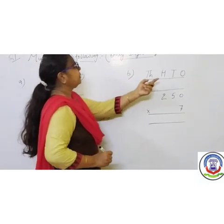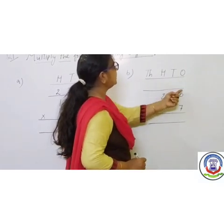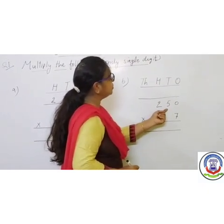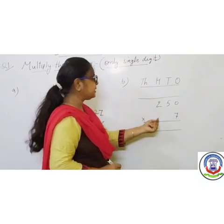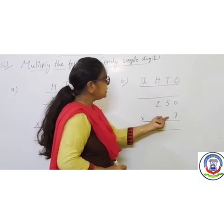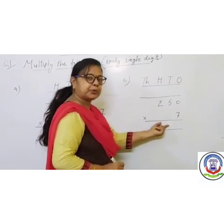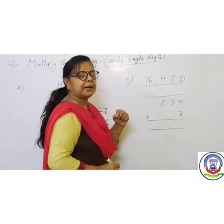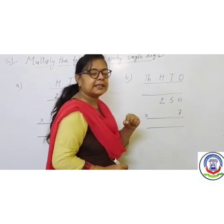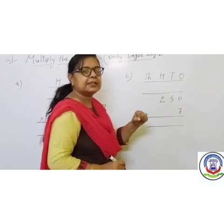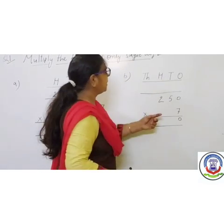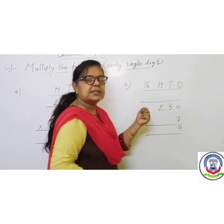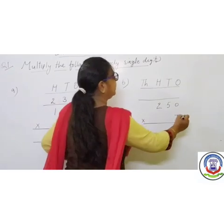Next problem: 1's place is 0, 10's place is 5, 100's place is 2. Multiply 250 by 7. We start with the 1's place: 7 multiplied by 0 — 7 zeros are 0. Next, 10's place is 5: 7 multiplied by 5 — 7 fives are 35.